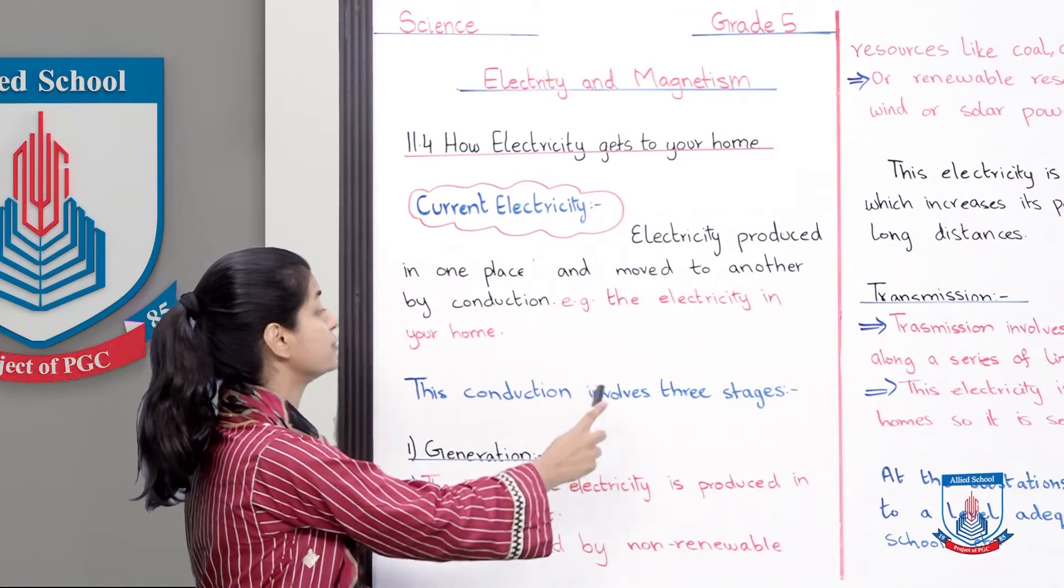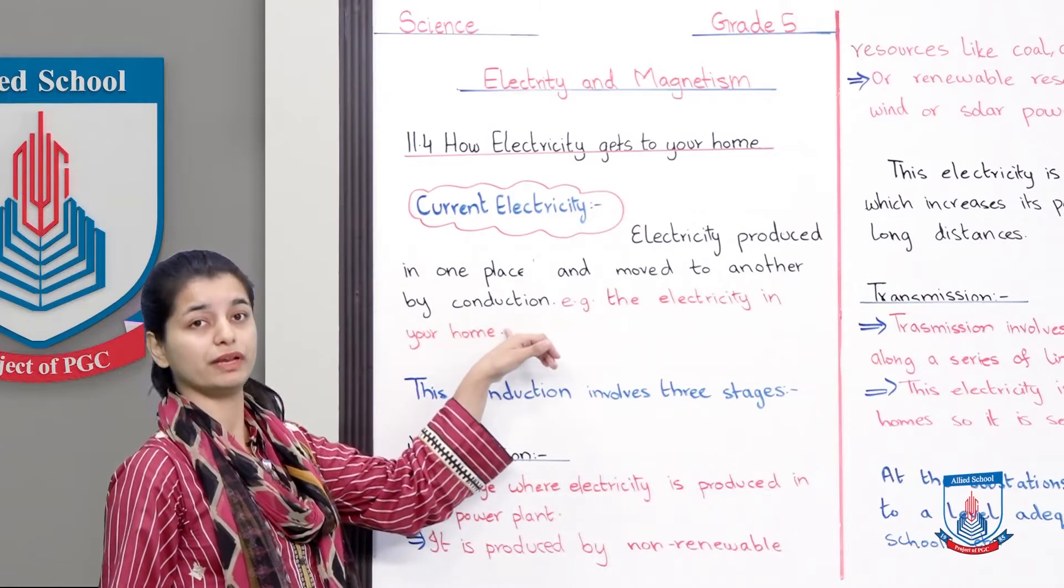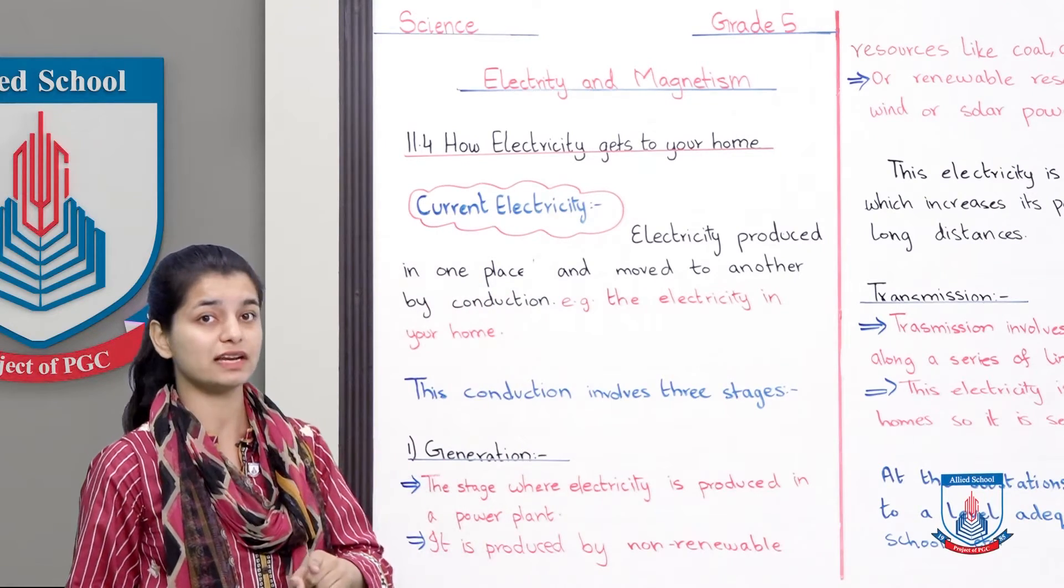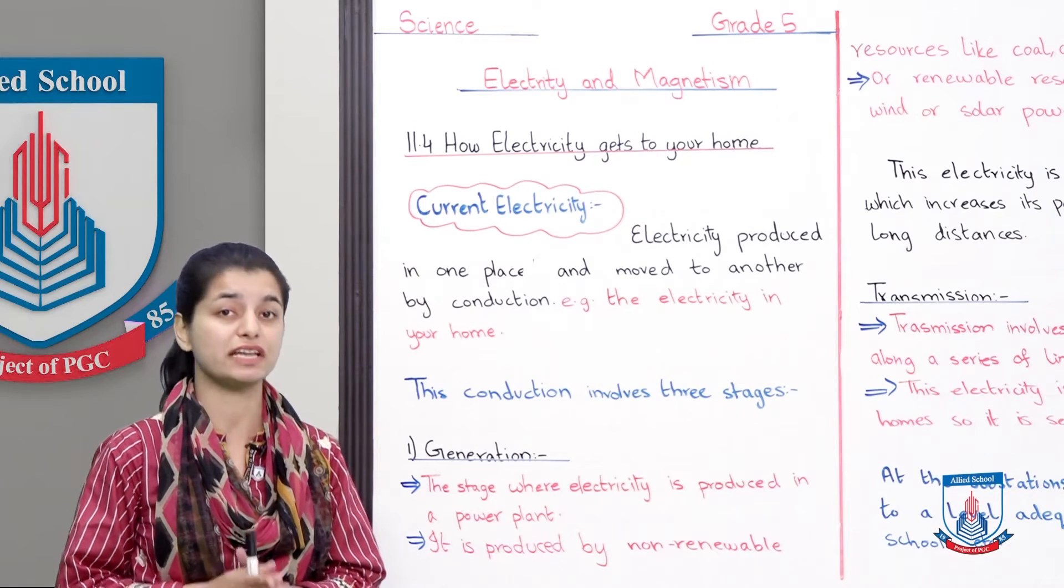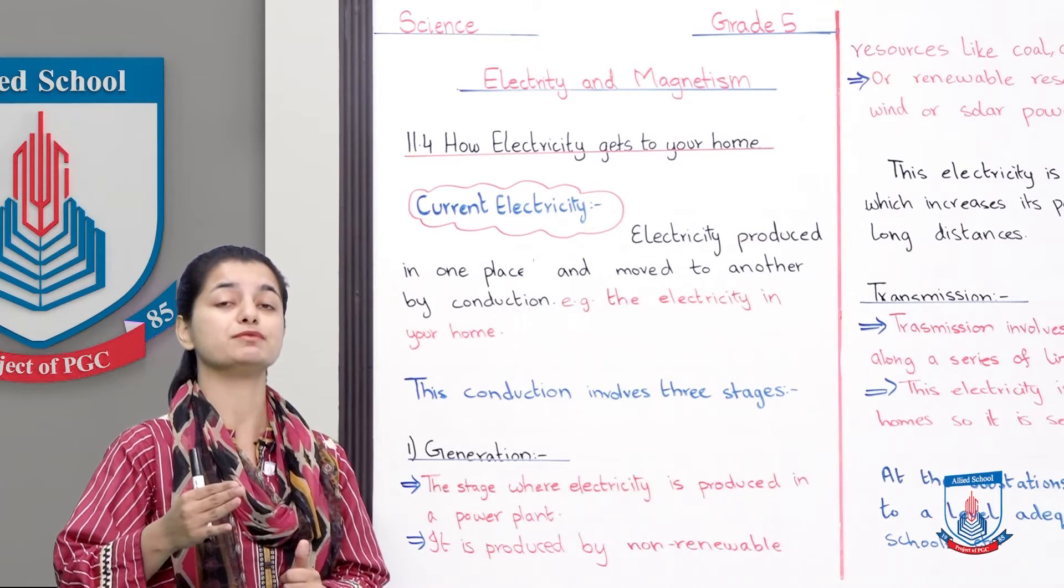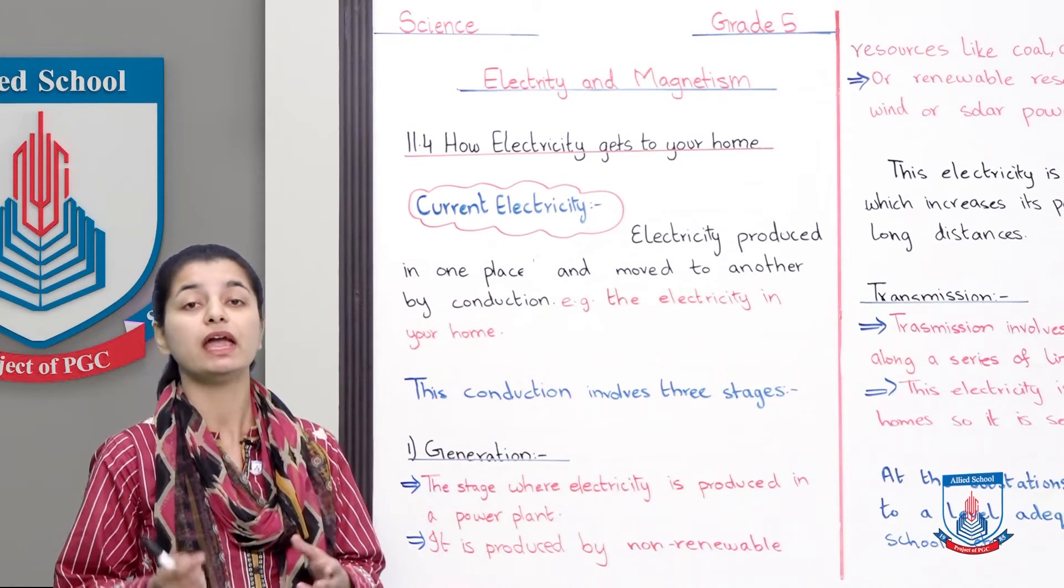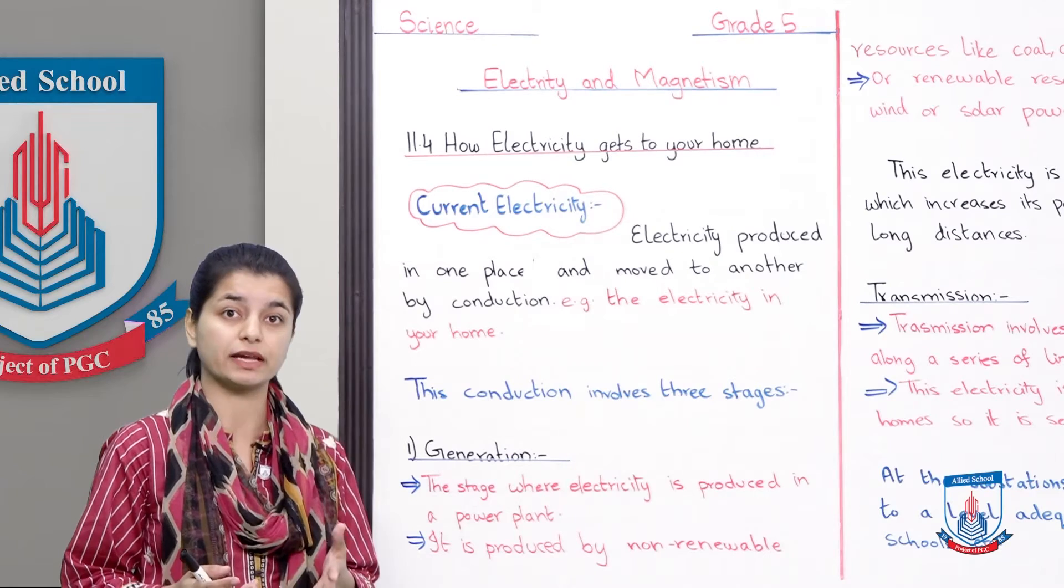This conduction involves three stages. The conduction of current electricity from where it is produced to our homes basically has three stages, three different steps in which this process takes place.